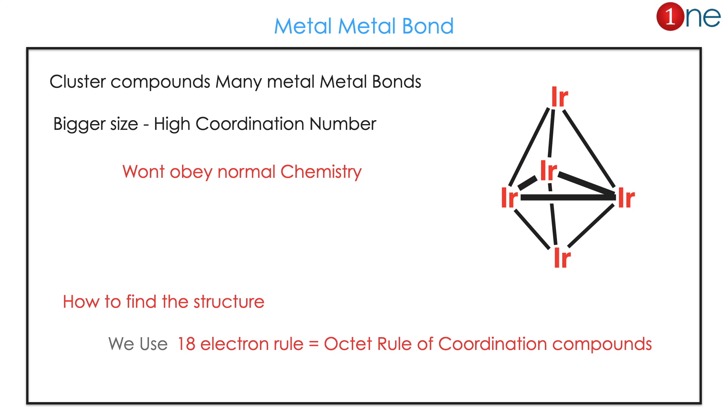So how do you find the structure? It won't obey the octet rule, so we have to use the 18-electron rule. It's the octet rule for coordination compounds and decides the stability.